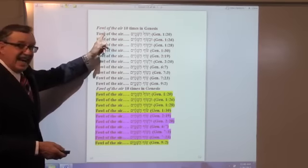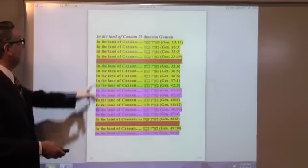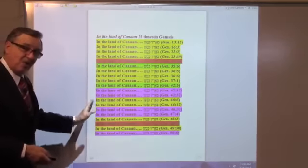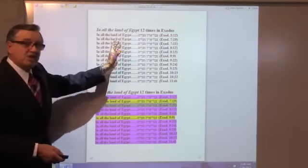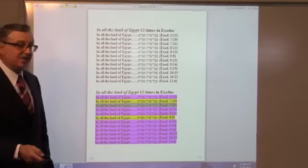Fowl of the air, decatal meter, supposedly has two authors, ten times. In all the land of Canaan, double decatal meter, supposedly has four authors. In all the land of Egypt, twelve times, dodecatal meter, supposedly has three authors.